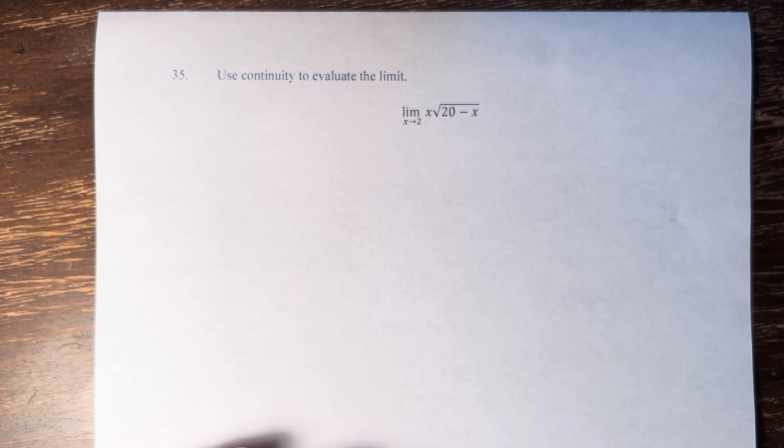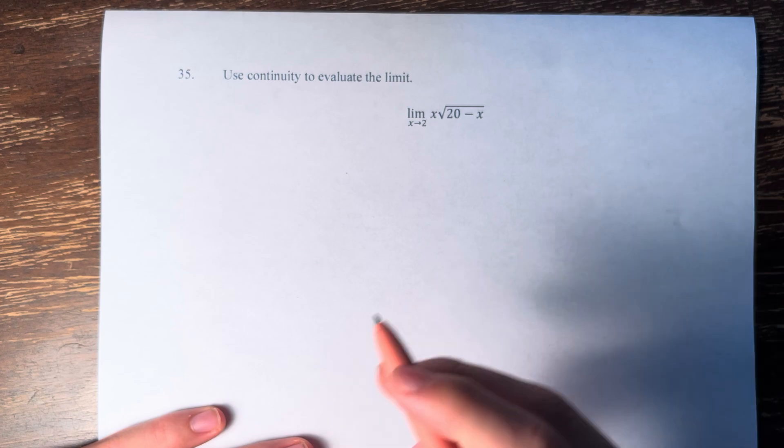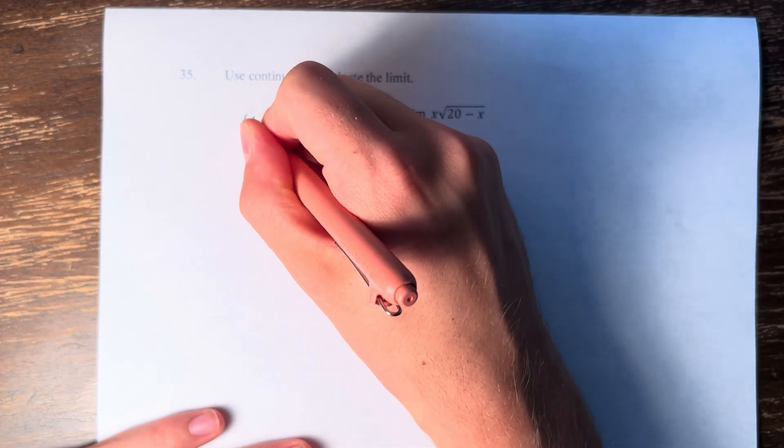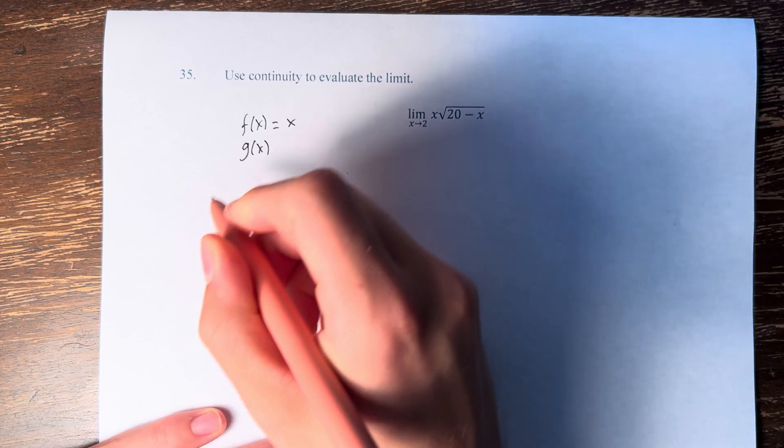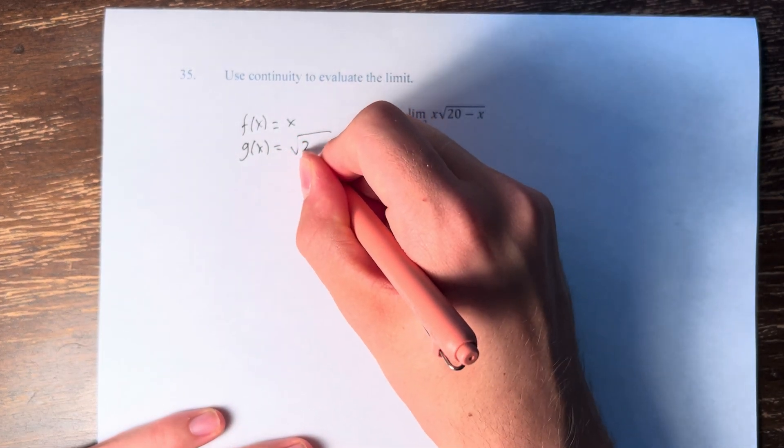So to prove that this function is continuous over its domain, we're going to split it into two different functions. We have f of x is equal to x, and g of x is equal to the square root of 20 minus x.